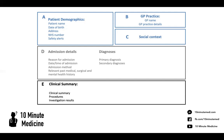Then we move on to the clinical summary, where you'll talk about the presenting complaint, history of presenting complaint, and what's happened up till now. Then we move on to procedures: have they had any procedures while in hospital? For example, has an abscess been drained, have they had an NG tube in, had a radiological drain, an OGD, an endoscopy, or a colonoscopy? You want to include all of that here.